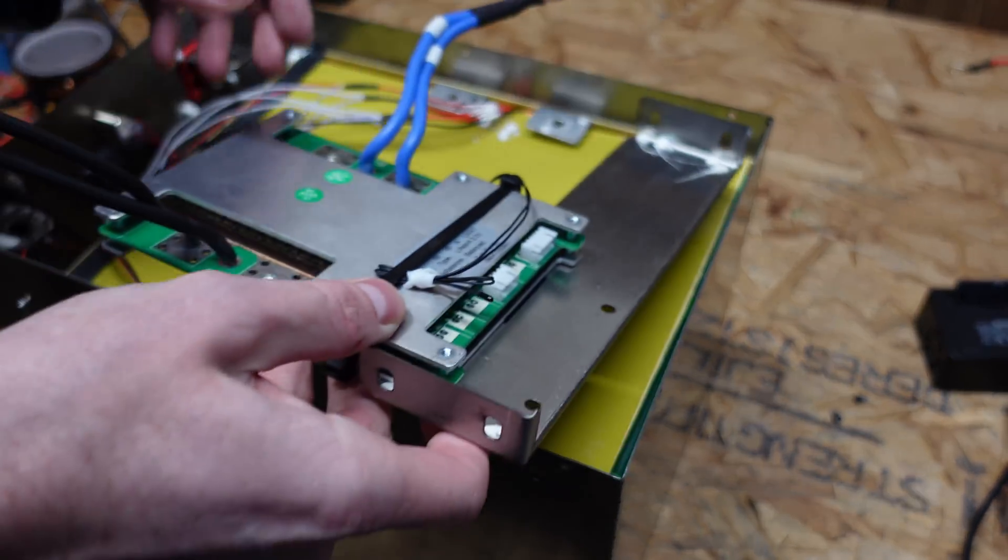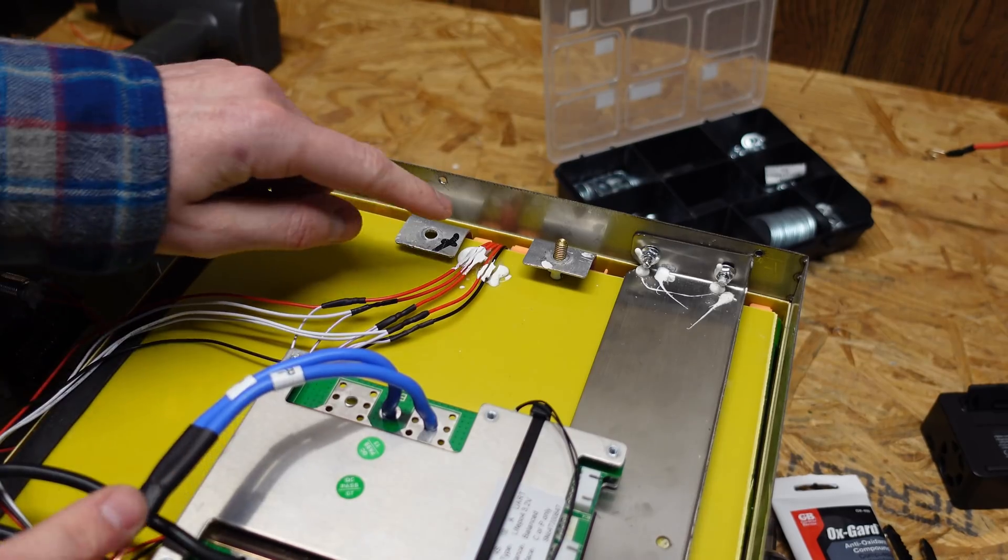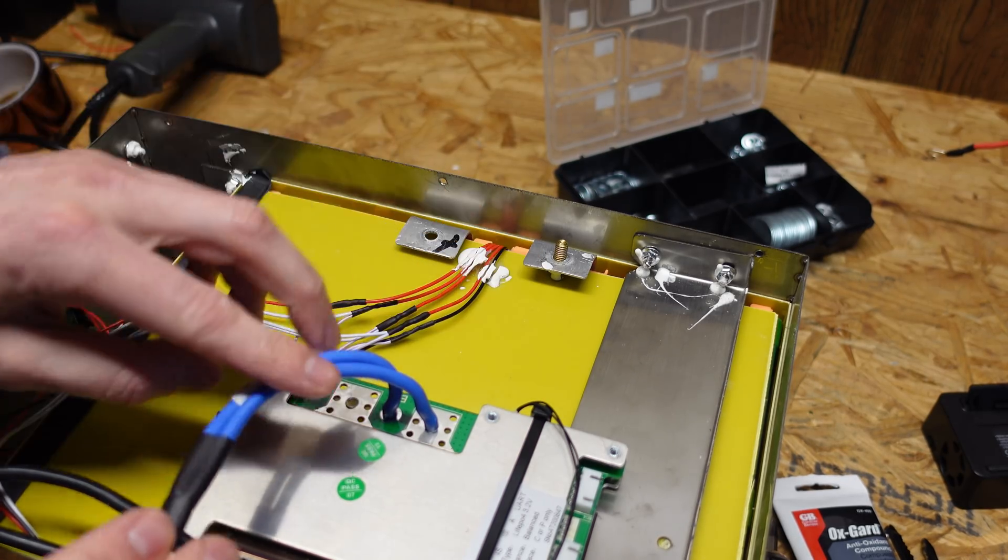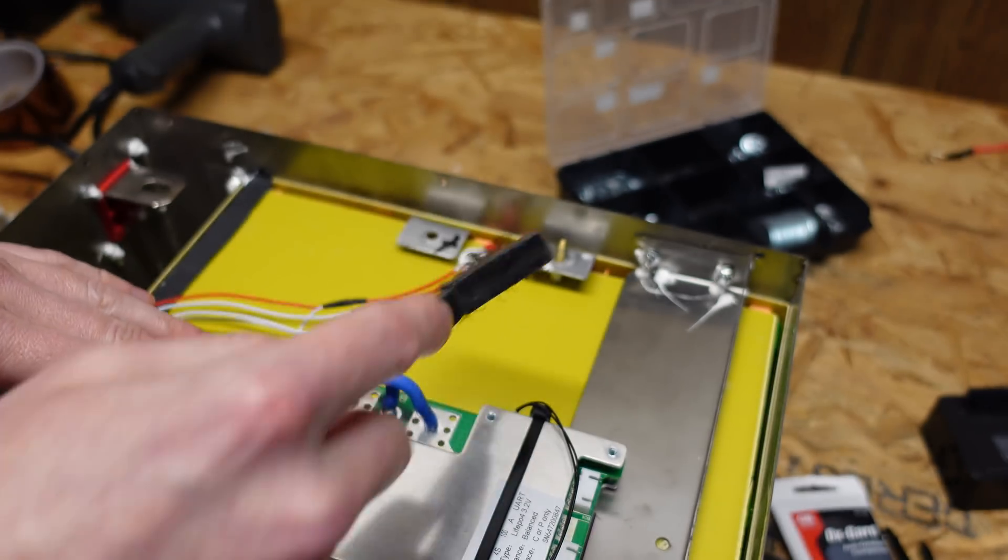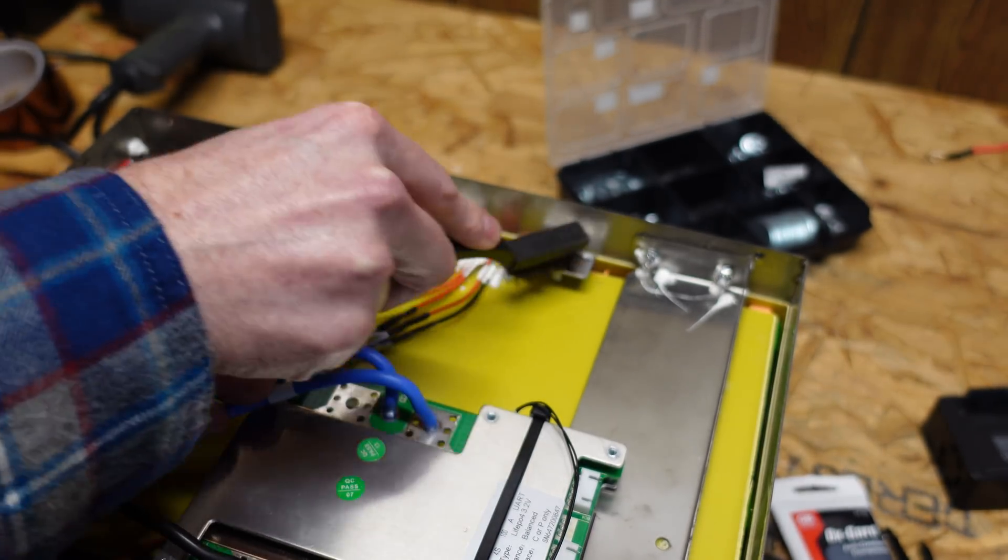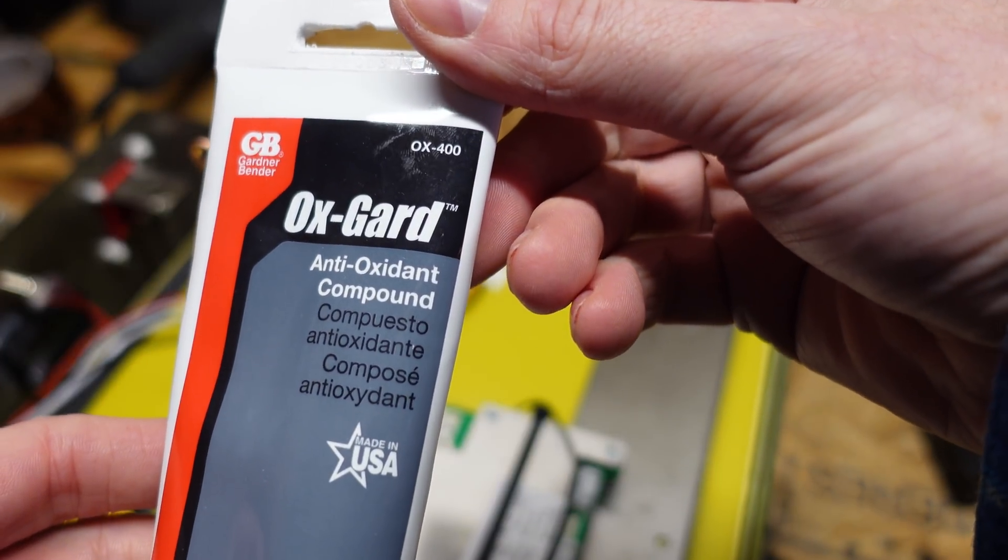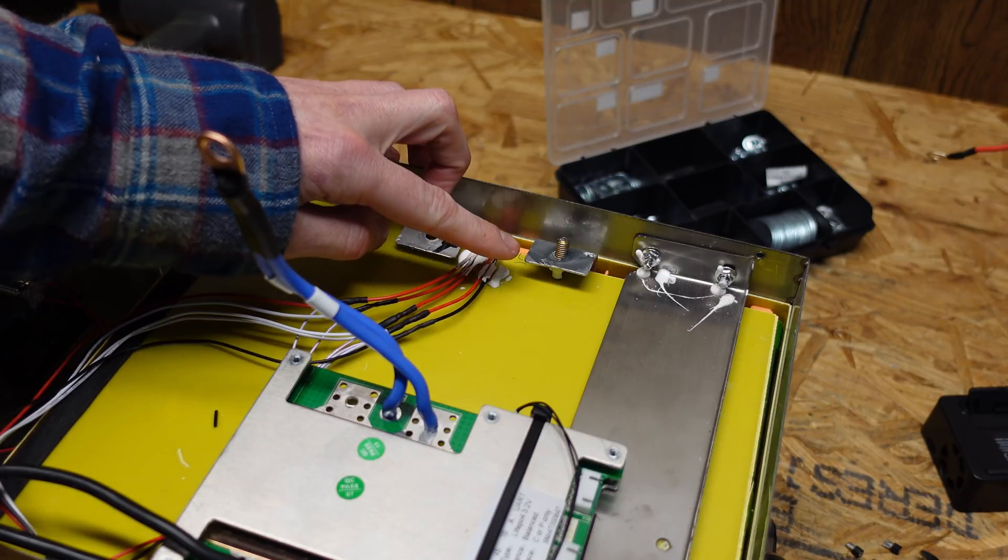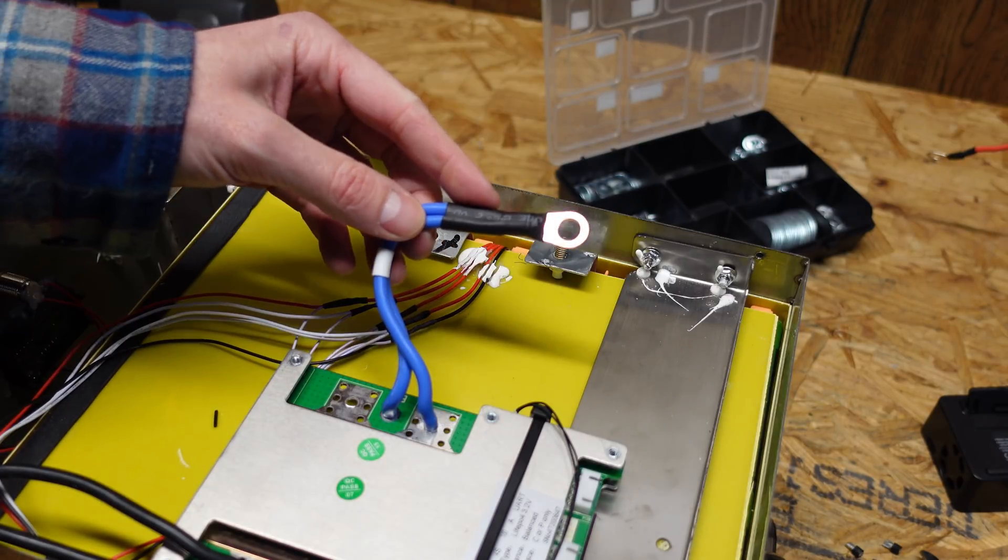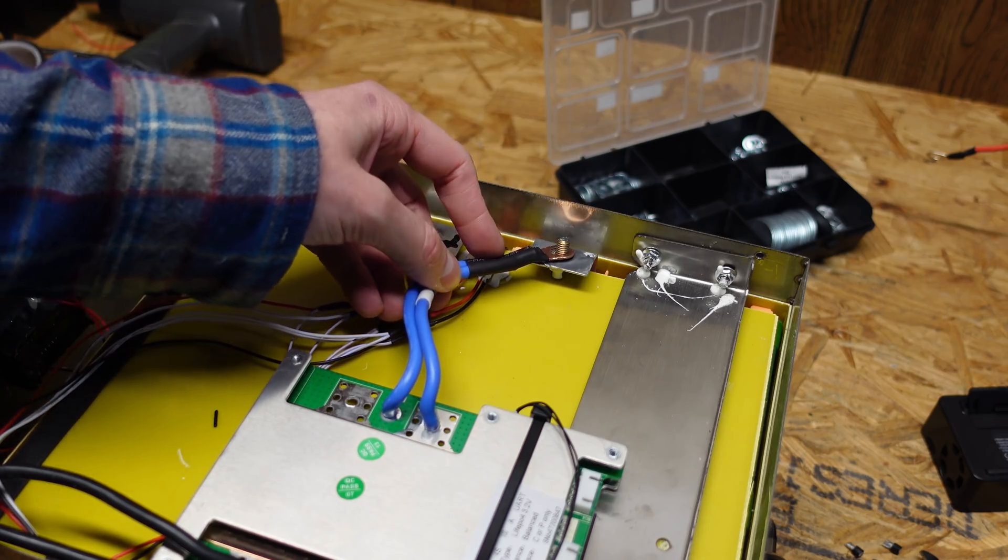With that step done, we can go ahead and put our BMS into place. Now seeing this is an aluminum connection over here, and I'm going to be attaching copper to it, first I'm going to take this wire brush and just clean around the terminal a little bit, and then apply a small amount of this OxGuard antioxidant compound. You just want a very thin amount. In case I didn't mention it earlier, this is the B-minus cable from the BMS that goes onto the battery.